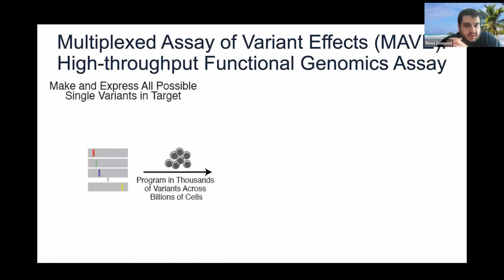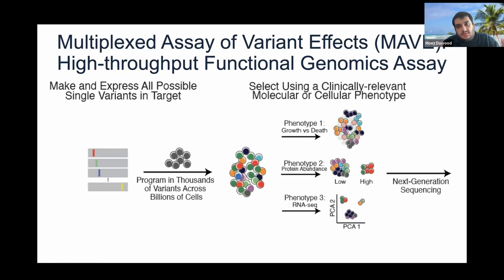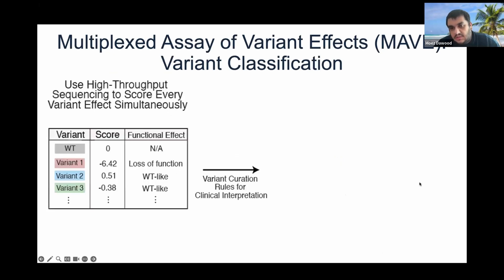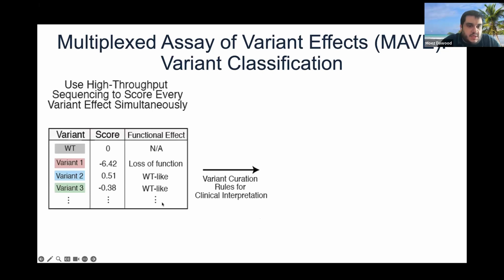I think this audience is very familiar with MAVEs, but just to make sure we're all on the same page — part of the magic of MAVEs is that you have the ability to experimentally make and express all possible single variants in a target, and then you can select using a clinically relevant molecular cellular phenotype to test each of these variants and understand their variant effects. Then, as you have this mass cell population that reflects those perturbations, you can read it out with next-generation sequencing, giving you a high-throughput way to score every variant effect simultaneously.